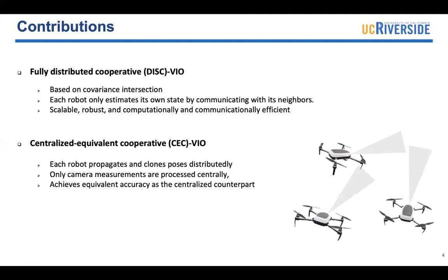The contributions can be summarized in two parts. The first is DISC-VIO. We make use of covariance intersection to achieve a fully distributed setting, where each robot only estimates its own state by communicating with its neighbors. The method is more robust, efficient, and scalable. The second contribution is the centralized equivalent method. This method will be used as a benchmark to evaluate the performance of DISC-VIO.